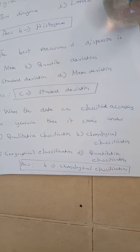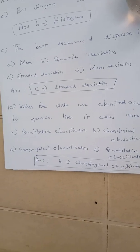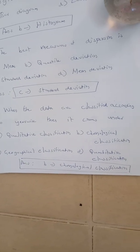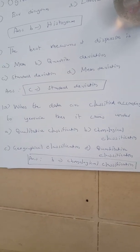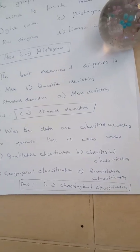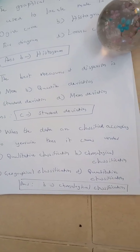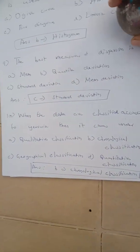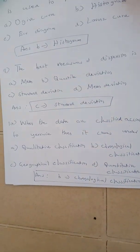Question number 10. When data are classified according to year-wise, it is called chronological classification. So all 10 questions have been covered.